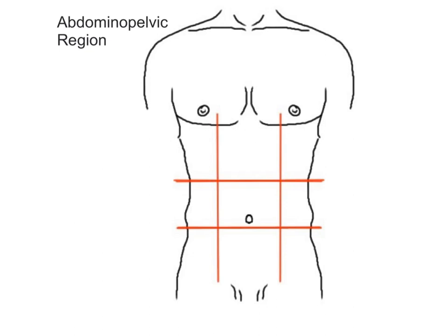There are two methods of dividing the abdominal pelvic cavity into smaller areas in order to more easily describe the location of the internal organs contained within this space. The first method involves dividing the cavity into nine regions by arranging two horizontal and two vertical lines together into a tic-tac-toe grid. This nine-region method is commonly used for anatomical studies in order to describe organ location in more specific detail.